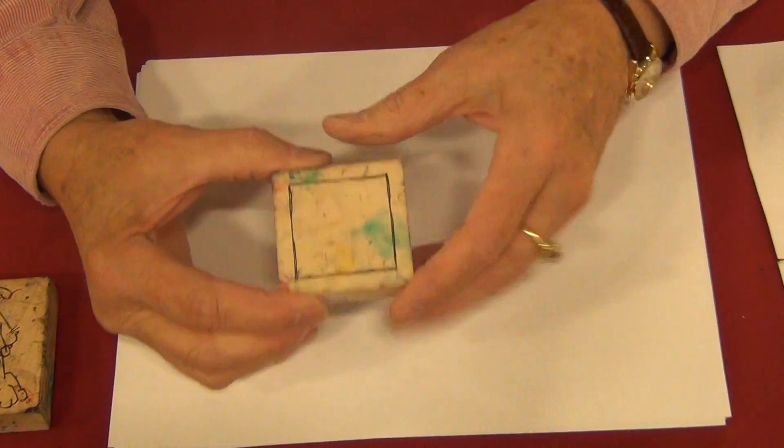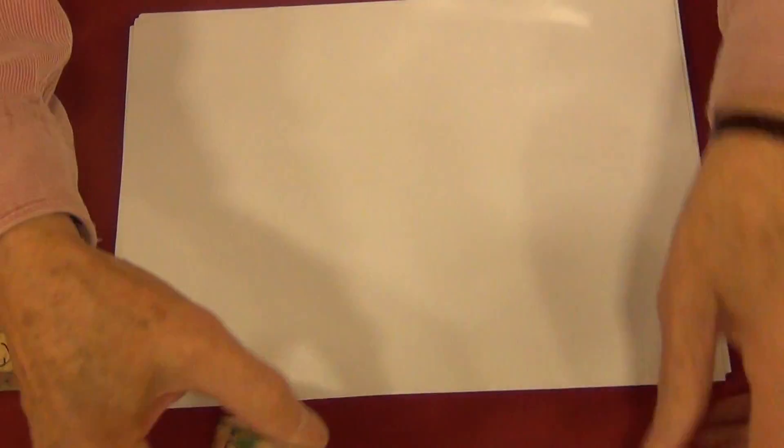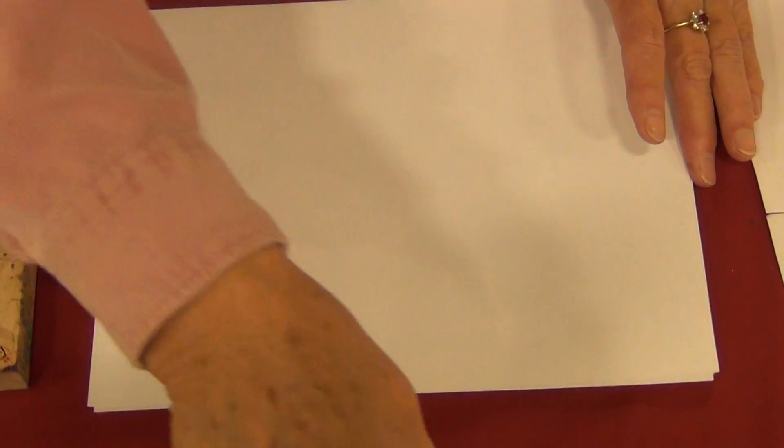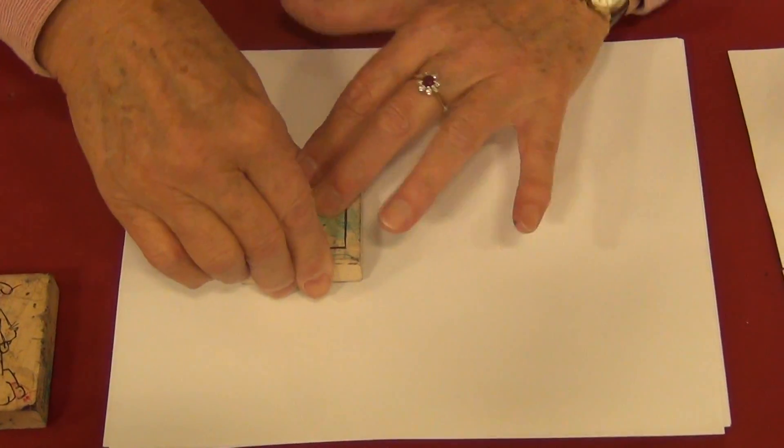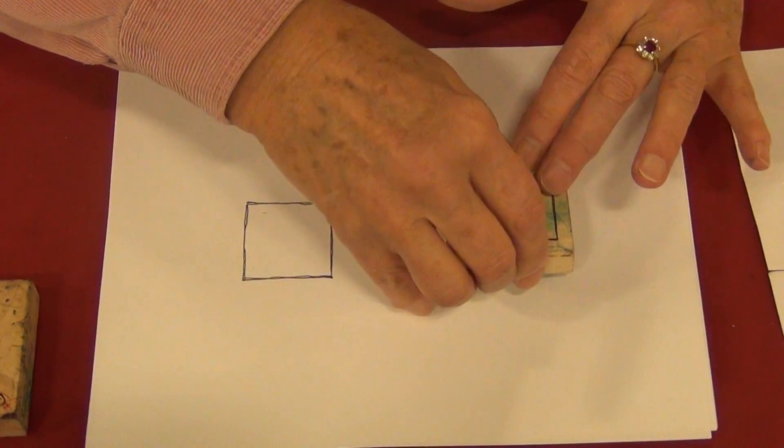I'm going to take this little square - please forgive my stamps looking all grubby, but they stamp just fine in black ink. I'm going to put it down once and twice.